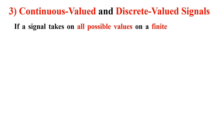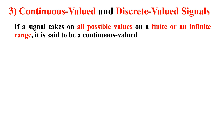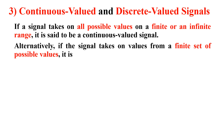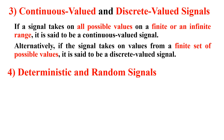Moving further: continuous valued and discrete valued signals. If a signal takes on all possible values on a finite or infinite range, it is said to be a continuous valued signal. Alternatively, if the signal takes on values from a finite set of possible values, it is said to be a discrete valued signal.